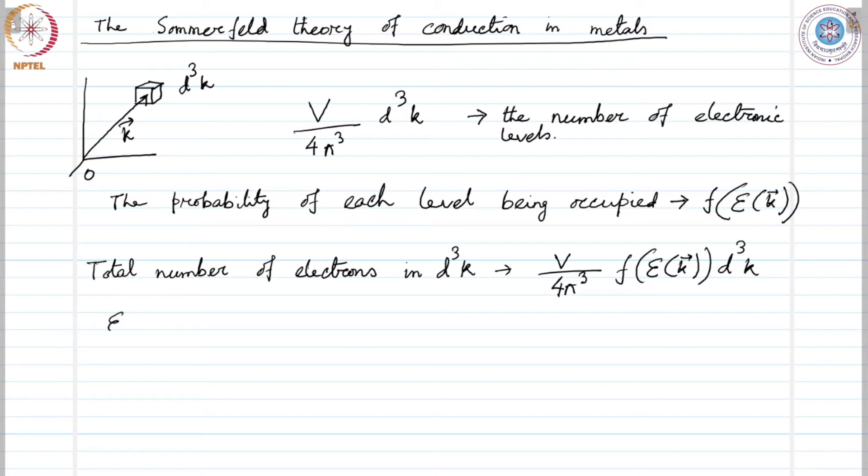And what is energy here? Energy for free electrons is nothing but h cross squared K squared over twice m, where m is the mass of the electron. Velocity of a free electron having wave vector K would be given as h cross K over m.